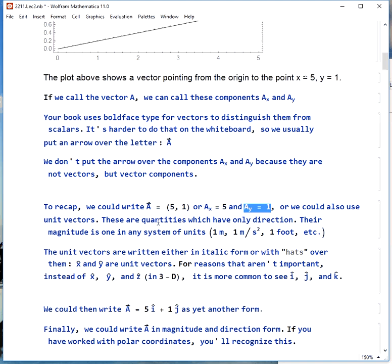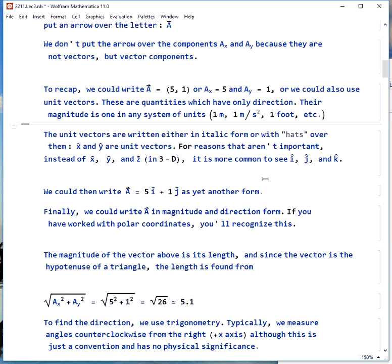One other thing we could do is use unit vectors. These are kind of the opposite of scalars in that they have direction but no magnitude. Their magnitude is always just 1, regardless of what system of units you're using. We usually write the vectors either in italic form in a book, or with little hats over them on the whiteboard. X hat and y hat would be unit vectors in the x and y direction.